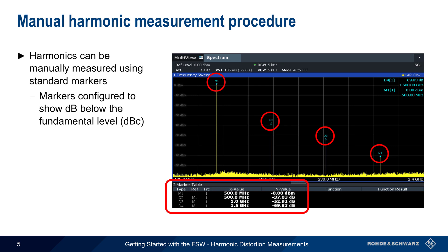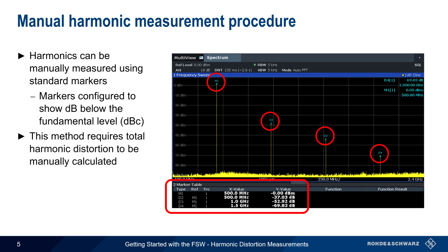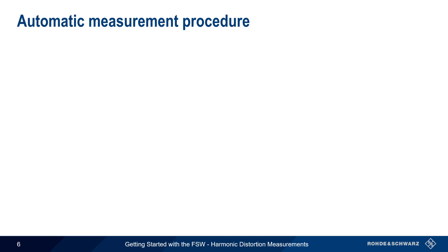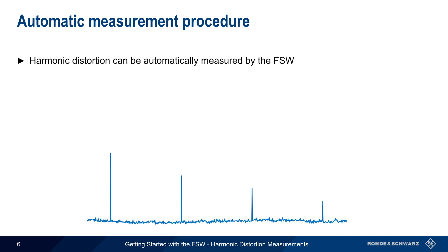Note that this method does not automatically calculate total harmonic distortion, which is a somewhat non-trivial task. Another drawback to this method is that it's very time-consuming and prone to error or measurement inaccuracy. Therefore, the FSW's automatic measurement procedure is recommended when measuring harmonic distortion.